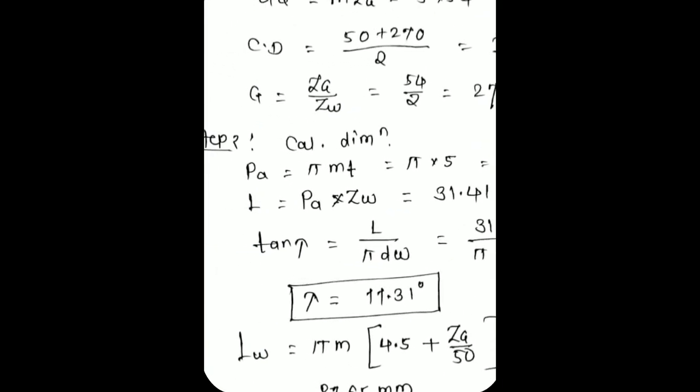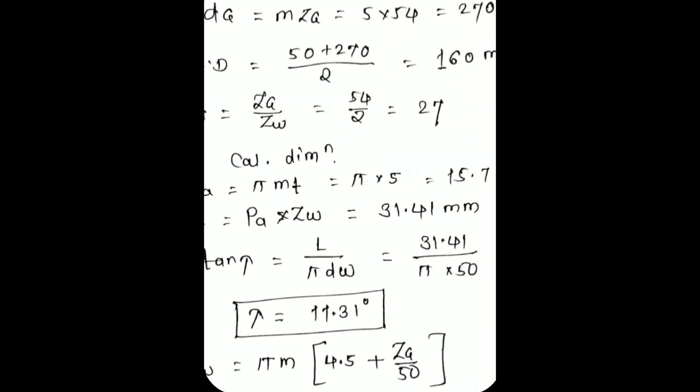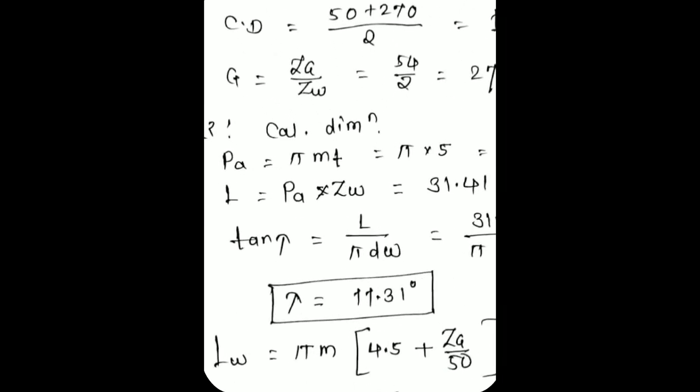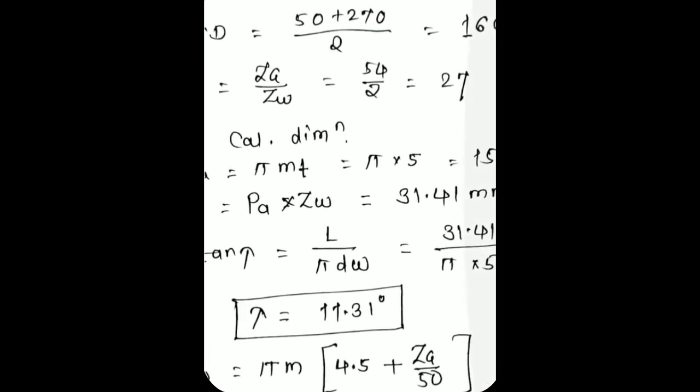They have also asked for gear ratio, which is zg / zw. From the given values, gear ratio = 54 / 2 = 27. Next, for dimensions, I'll calculate axial pitch first: pa = π × m = π × 5 = 15.70 mm.